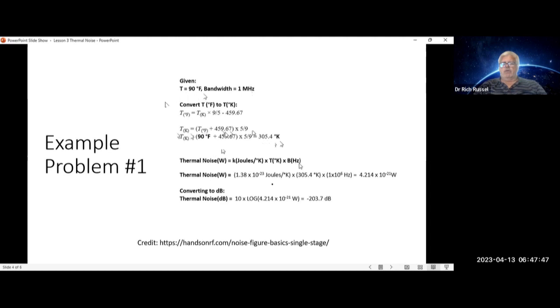Now, going back to our equation for thermal noise in watts, you plug in all the numbers, Boltzmann's constant, the temperature in Kelvin, which we just calculated, and your bandwidth, which is 1 times 10 to the 6 Hertz, which is equal to 1 megahertz. And that gives you 4.214 times 10 to the minus 21 watts. If you convert that to dB, you take log of the watts times 10, and that gives you minus 203.7 dB.